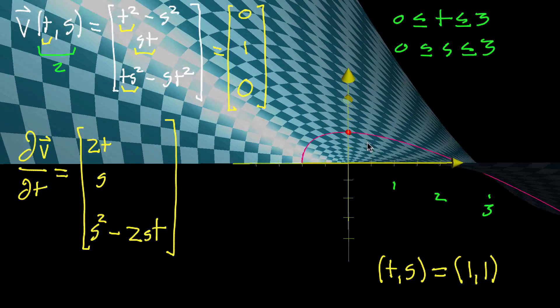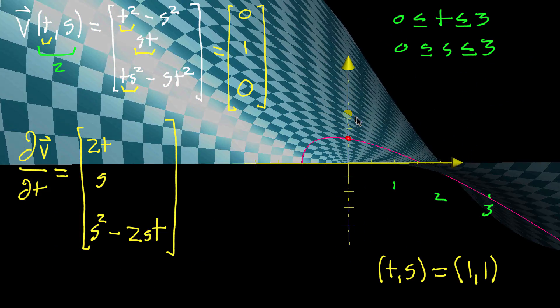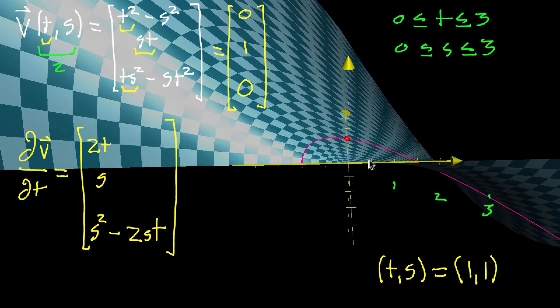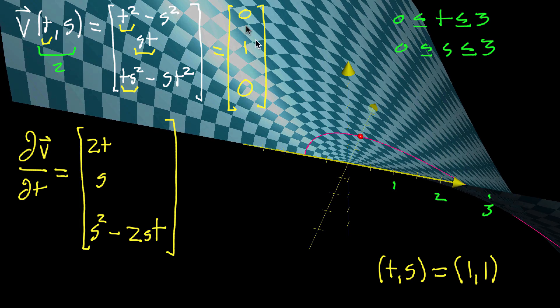If you had a different constant for s, it would be another curve, and maybe you can kind of see on the grid lines what shape those other curves would have, and they're all in a sense parallel-ish to this curve corresponding to s equals 1.